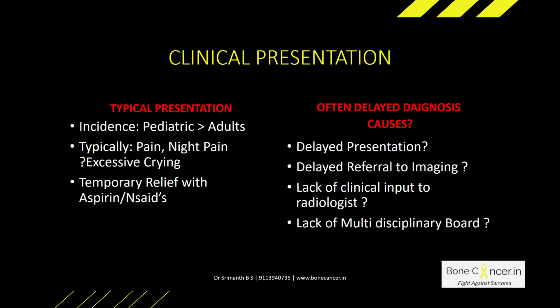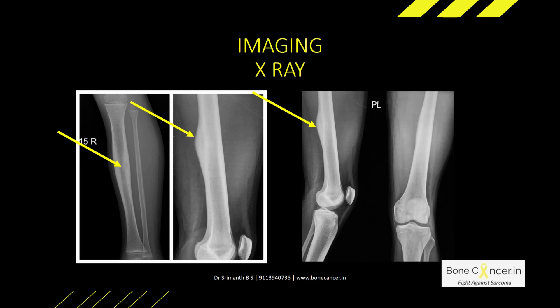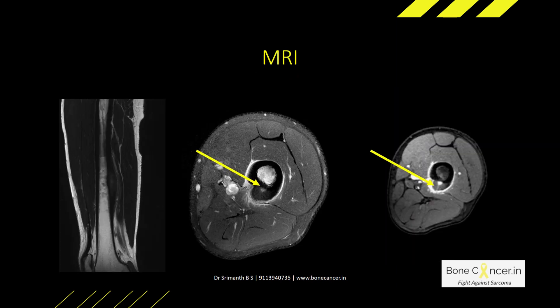Clinical presentation would be excessive night pain relieved by analgesics. There are a lot of issues in diagnosis and that's the reason most of the children come late to us. You can find these on x-rays sometimes, but there's a lot of bone formation or bone deposition. More characteristically, MRI and CT scan help us to identify these lesions with a nidus and a sclerotic rim.